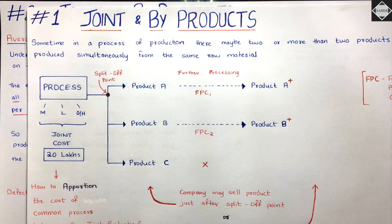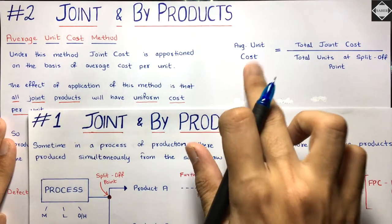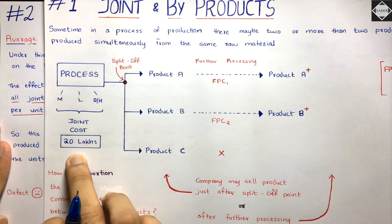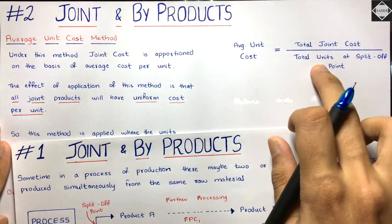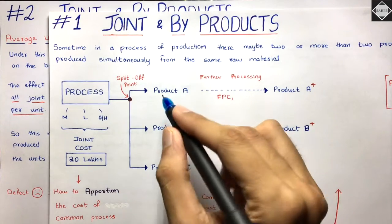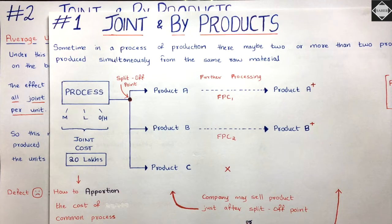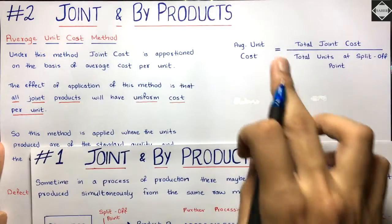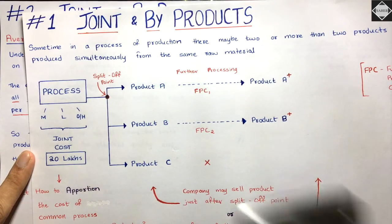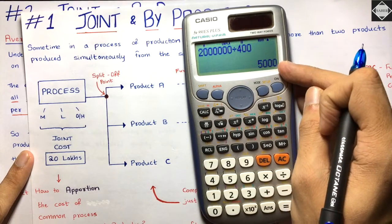You have to apportion the joint cost on the basis of average unit cost. To calculate it, take the total joint cost — say 20 lakhs — and divide it by the total units at the split-off point. For example, if Product A produced 100 units, Product B 100 units, and Product C 200 units, the total is 400 units. So 20 lakhs divided by 400 gives you the average cost per unit.